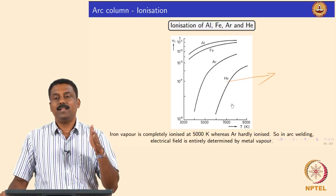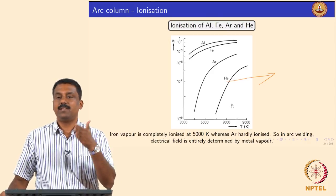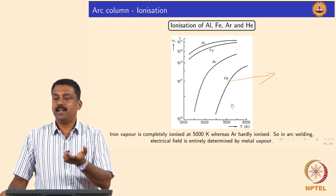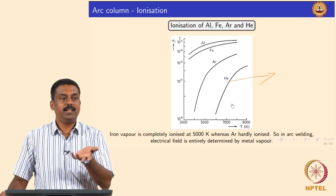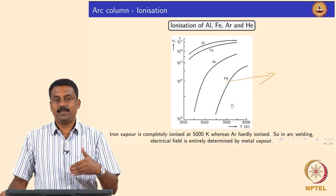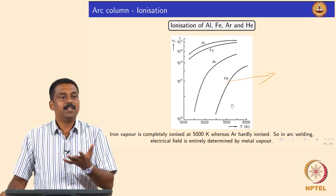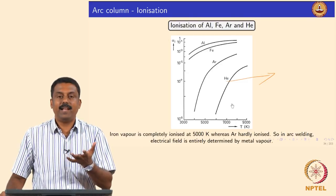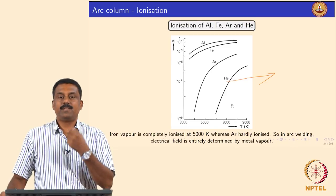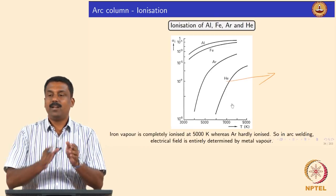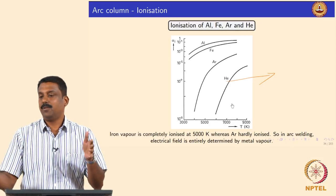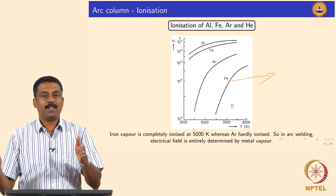The ignition is by thermionic emission. The moment ignition happens, the electrons reach the gas medium. Upon gaining the ionization energy EI, the electrons are knocked out, creating helium ions. In this process you create an avalanche of these reactions. The moment you have enough charge carriers developed, you will have conduction of these charge carriers from cathode to anode.